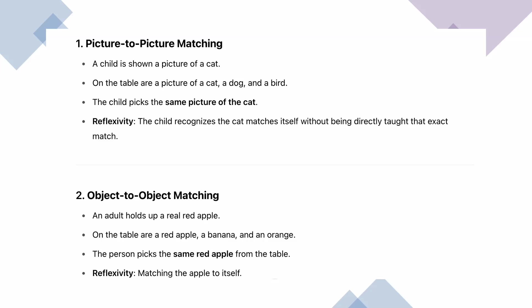Here are two examples of reflexivity. First: picture-to-picture match — a child is shown a picture of a cat, then presented with a cat, dog, and bird, and picks the same cat picture. That's reflexivity. Second: an adult holds up a red apple on the table alongside a banana and an orange, and the person picks up the same apple — apple to apple. Exact same to exact same.